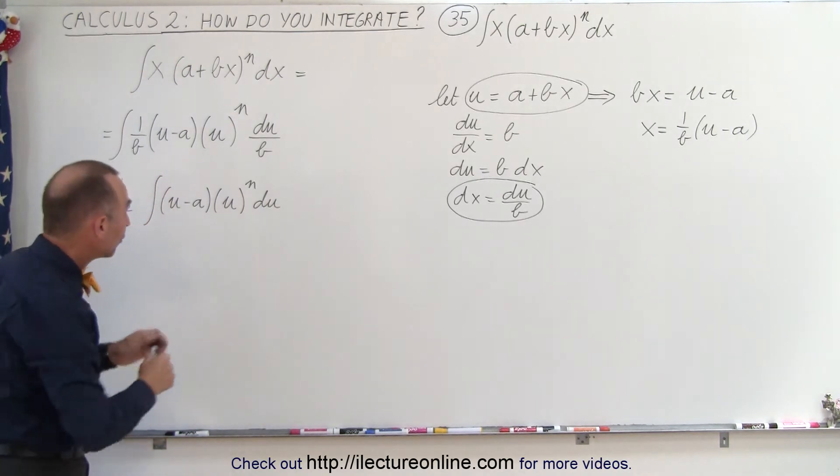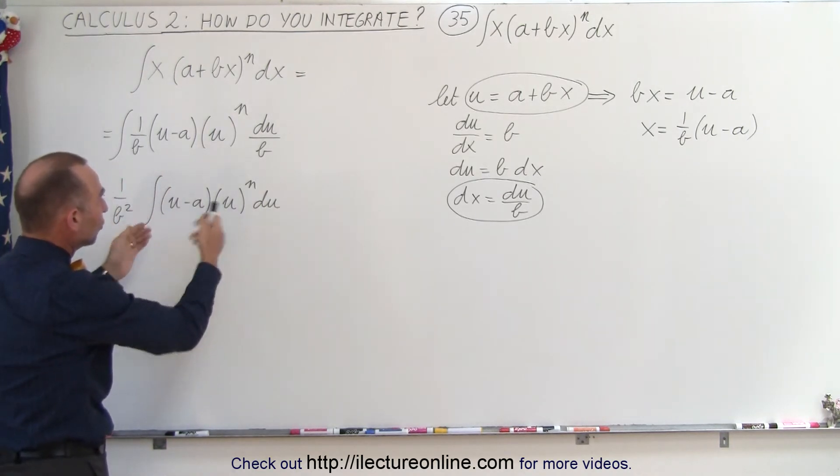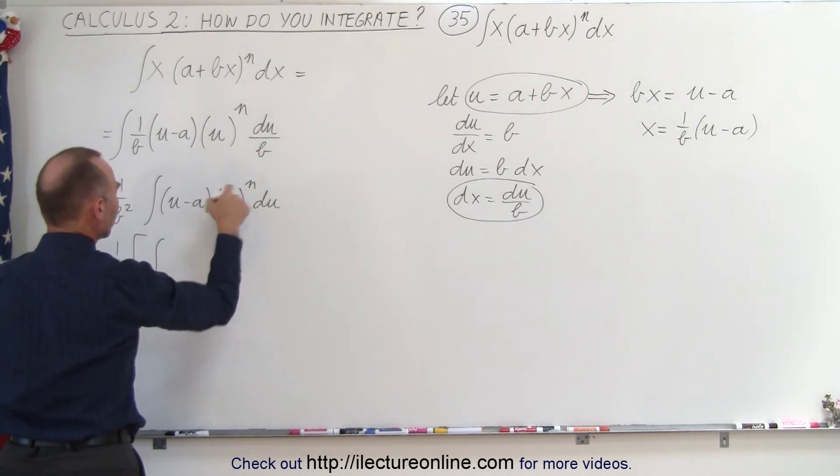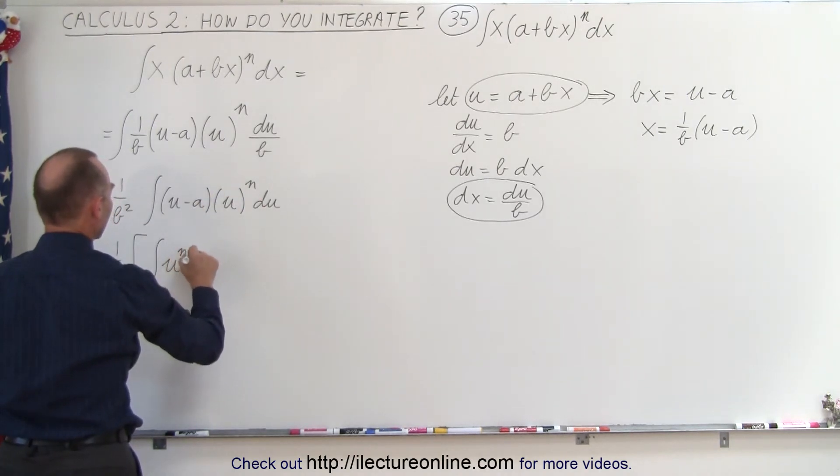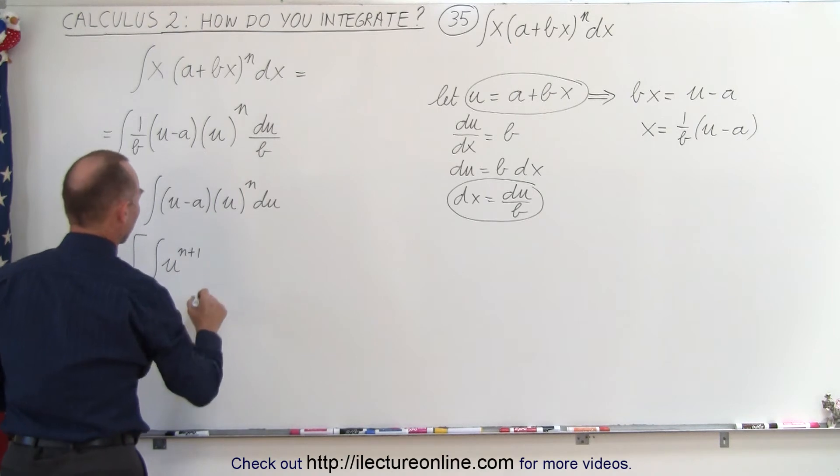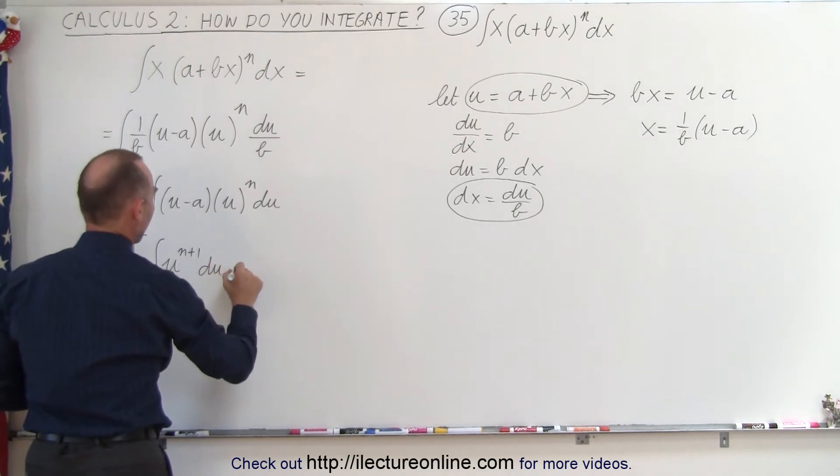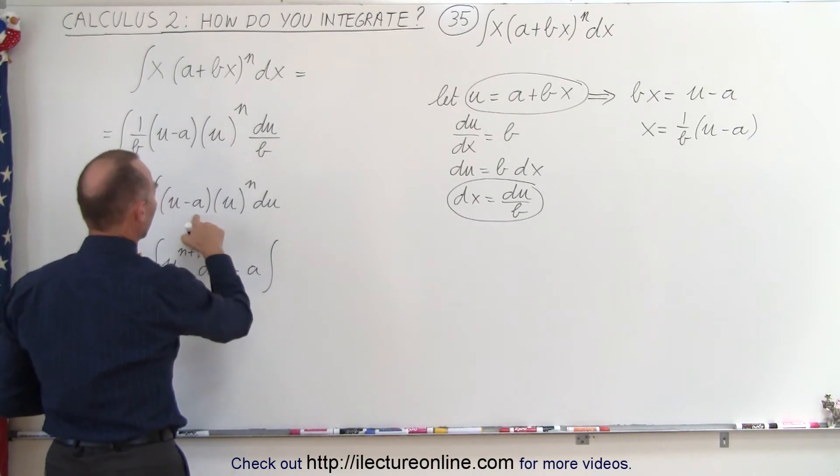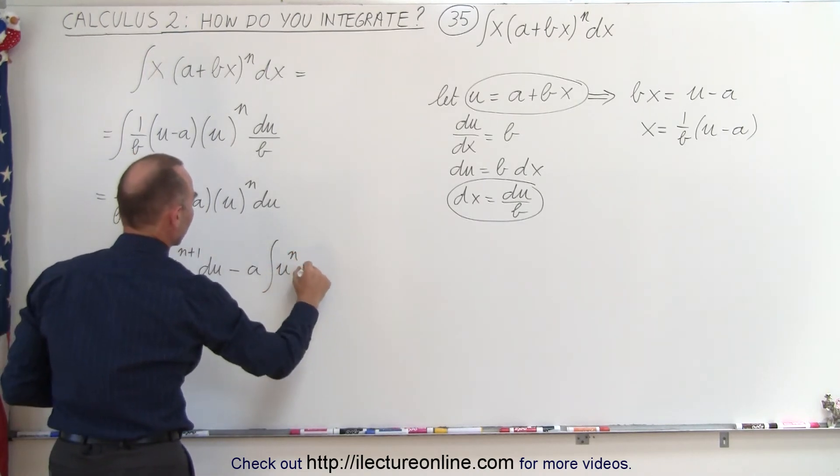Now all we have to do is multiply this out and write this as two separate integrals. This can be written as 1/b² times the first integral, which would be u times u^n, which is u^(n+1) du, minus we can pull out an a times the integral of u^n du.